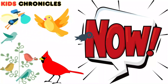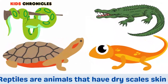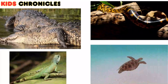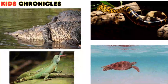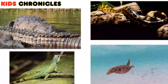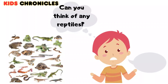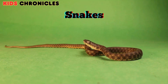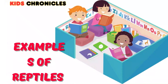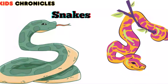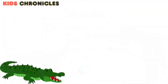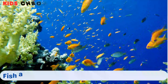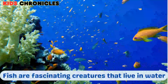Now let's talk about reptiles. Reptiles are animals that have dry, scaly skin and lay eggs. They are cold-blooded, which means their body temperature depends on the environment. Examples of reptiles include turtles, snakes, lizards, and crocodiles.